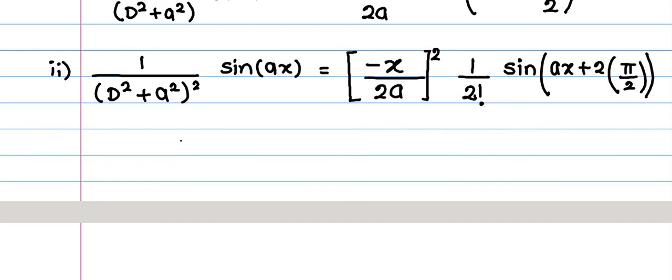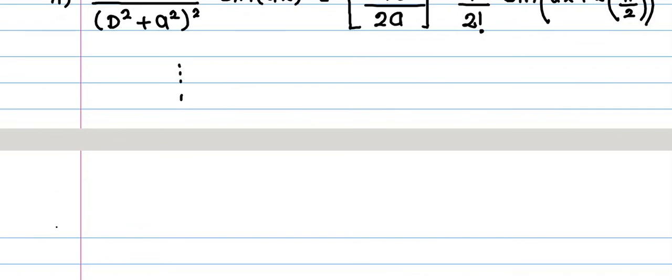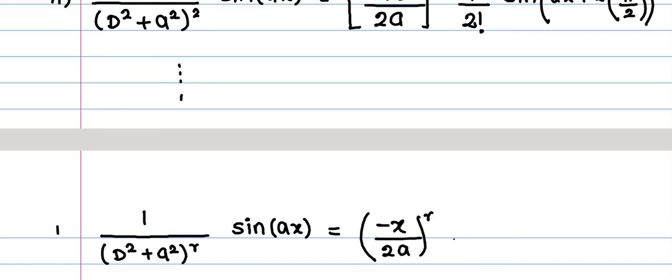We can generalize this as, the second formula will be if d square plus A square raised to R into sin A x, then it is equal to minus x upon 2 A raised to R into 1 upon R factorial into sin A x plus R times pi by 2.